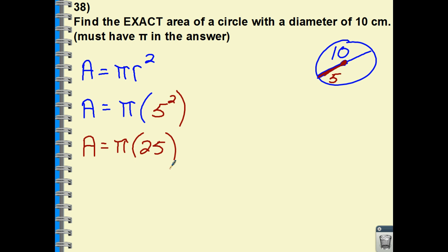So A is equal to pi multiplied by 25. Using a cleaner look, let's put the 25 first—25 pi. What's our unit? They give us centimeters. We're finding area, so we're in the second dimension. Final answer.